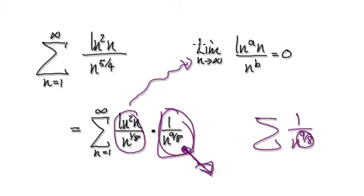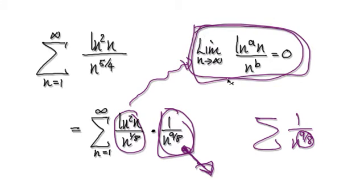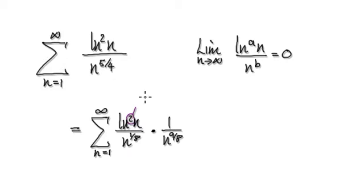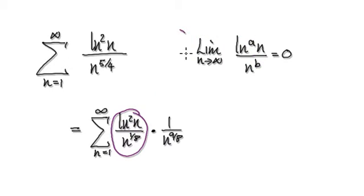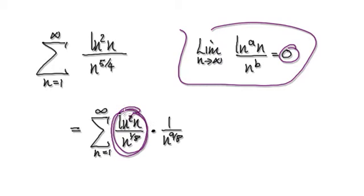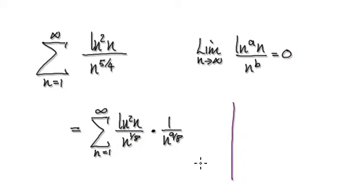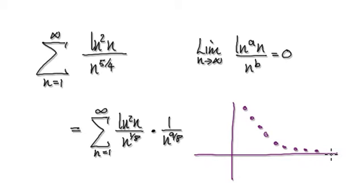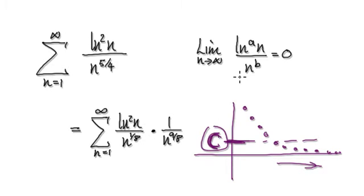We know this component here will converge. Make use of the result from the previous video: this part is your 'a' and this part is your 'b'. We know that the limit of this thing equals zero. For you to have a limit of zero, it means you're heading towards zero as n heads towards infinity, which means you're bounded by a number c — you're always less than this constant c.